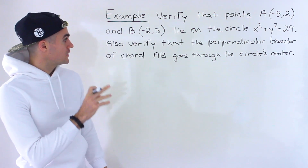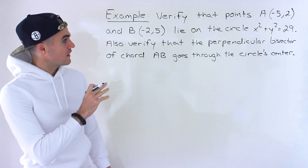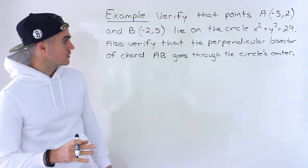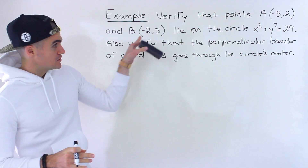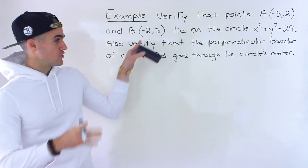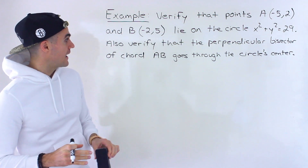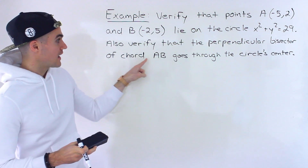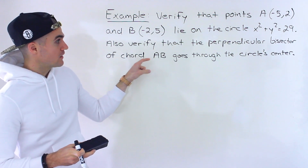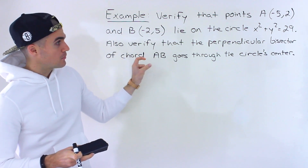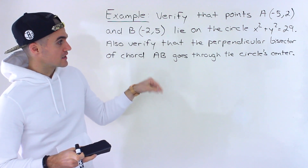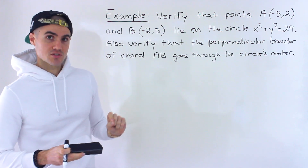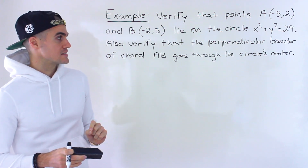We also have to verify that the perpendicular bisector between those two points — where those two points are going to be the endpoints of the chord AB — passes through the circle's center.